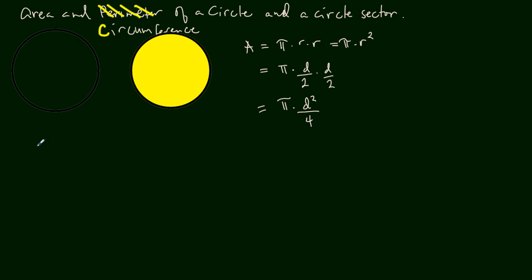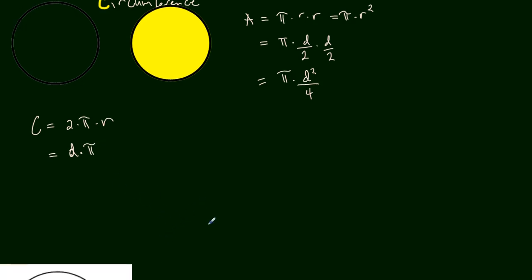And the circumference is always 2 times pi times the radius, or diameter multiplied by pi. Okay, let's see if we can find some example here. As you can see here now.